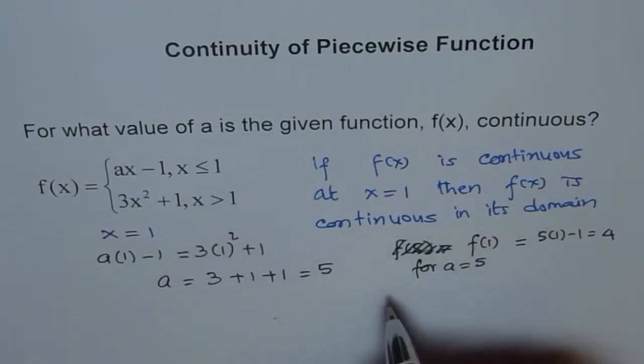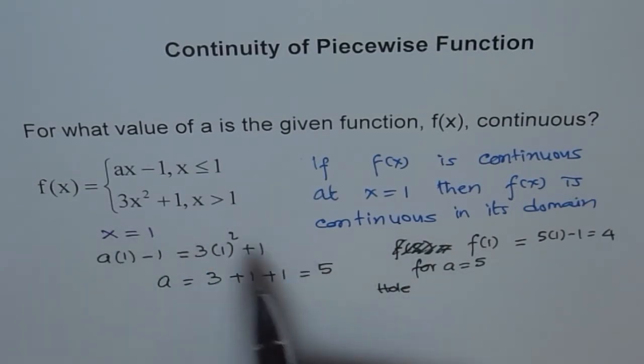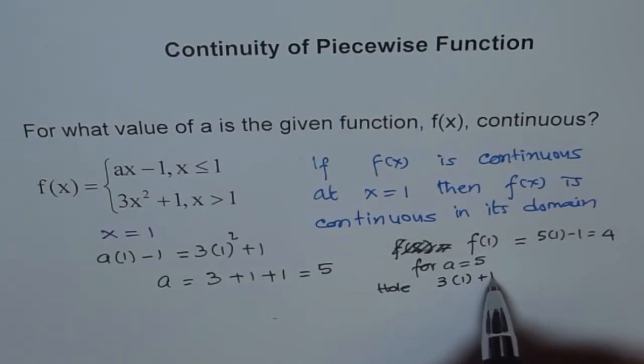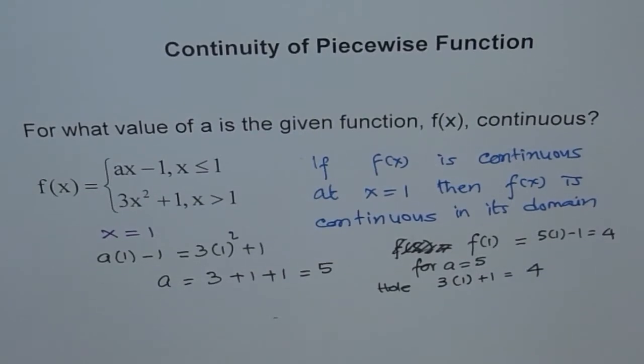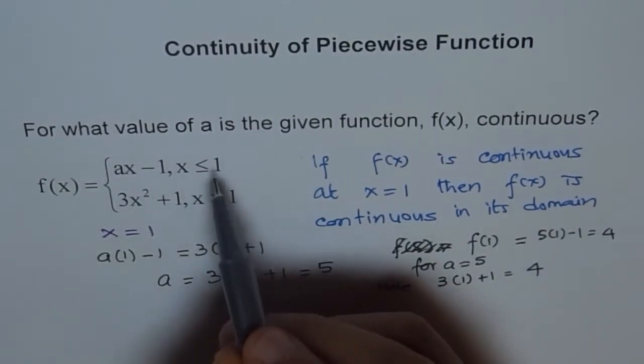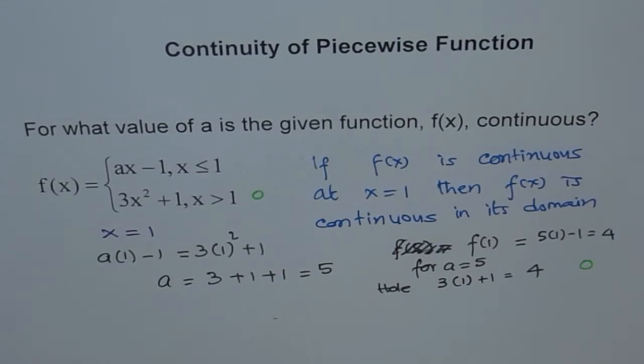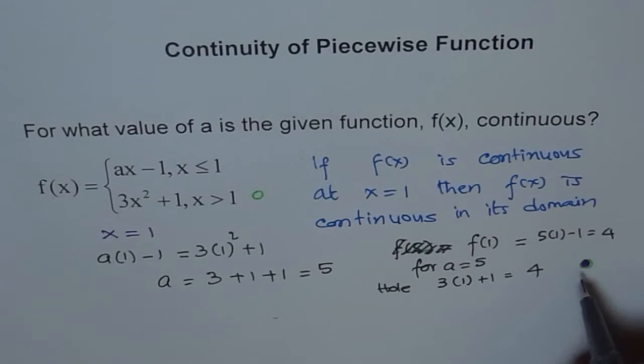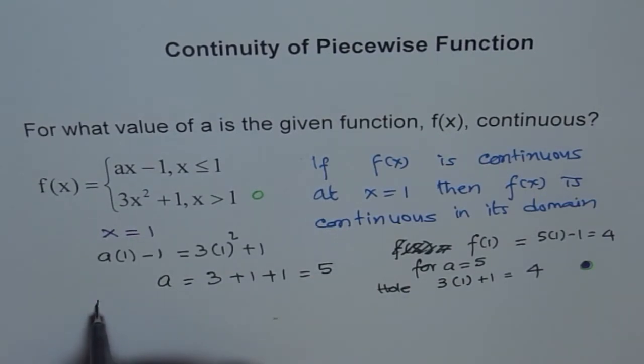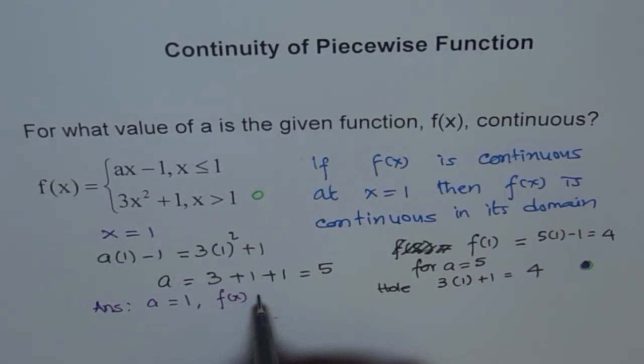Now if I plug it in the second part, if I put one here then I get three times one plus one which is also four. So both are correct. This means we have a hole here, this equation gives us a hole and that equation fills that hole up. Therefore the function becomes continuous. The answer: a equals one for f(x) to be continuous.